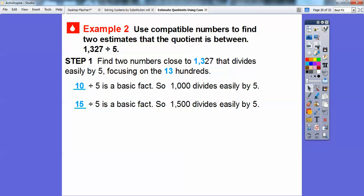So what numbers are easily divided by 5 that are between 13, this 13 right there? So 10 divided by 5 is a nice basic fact, so we're going to divide 1,000 divided by 5. And 15 divided by 5 is also nice and easy. 15 divided by 5 is 3, so 1,500 divides easily by 5 as well. So we're going to use those basic facts to divide. So 1,327 is going to be somewhere between this number and this number right here, so 1,000 and 1,500.